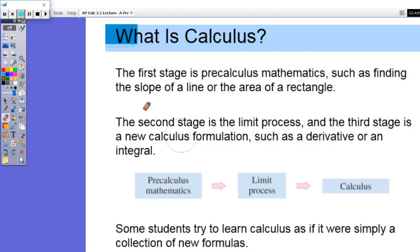The first stage is pre-calculus mathematics. When we're talking about calculus, the first thing we need to do is find the slope of a line or the area of a rectangle. Those are things you've been doing for quite some time, so it shouldn't be any new math. If you have weaknesses on either of those, just make sure you understand how to find area of simple basic shapes and slopes of lines.